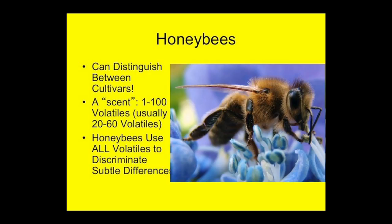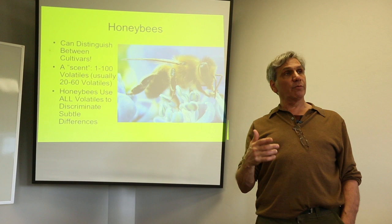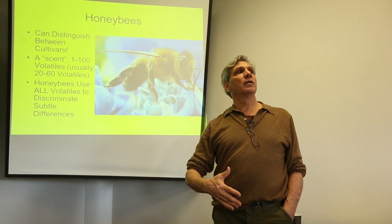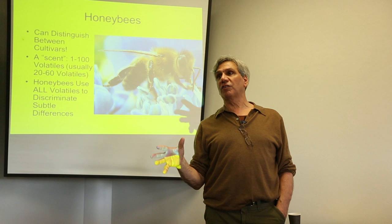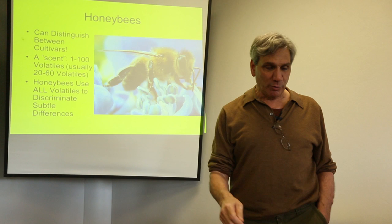Plants know how to seduce their pollinators — that's what it comes down to, if they're healthy. Honeybees can distinguish between cultivars within a species. A scent can consist of one to a hundred volatiles, usually in the neighborhood of twenty to sixty volatile substances, and honeybees use all the volatiles to discriminate subtle differences. Having a lot of variety in your farm can be a very good educational tool for pollinators. I found that my buckwheat was actually not attractive to honeybees because other pollinating species were blooming at the same time and they preferred those.